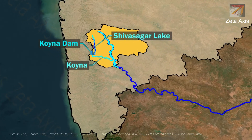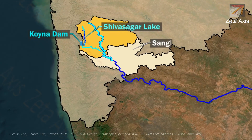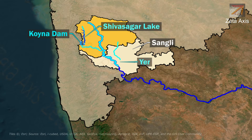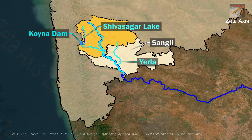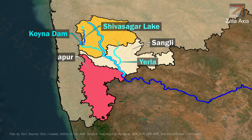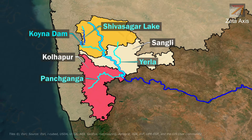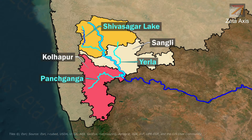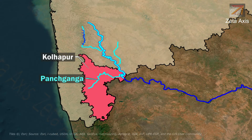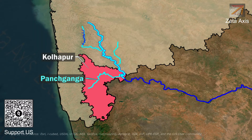From Satara district, the Krishna River enters Sangli district, where it is joined by the Yerla River originating from Satara district. From Sangli, the Krishna River flows along the boundary of Kolhapur where it meets the Pancha Ganga River. Pancha Ganga is formed by the confluence of five local streams, of which one is considered to be underground. The river is of prime religious importance and merges with the Krishna River on the borders of Kolhapur.